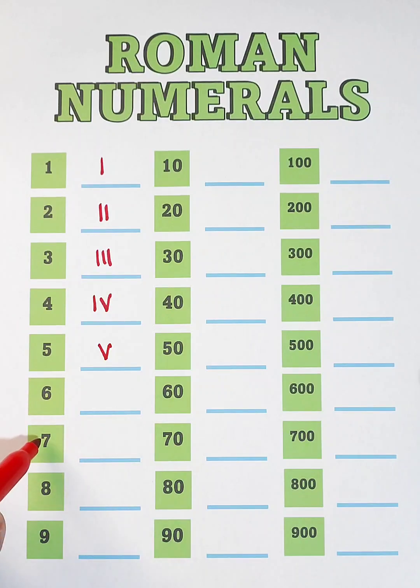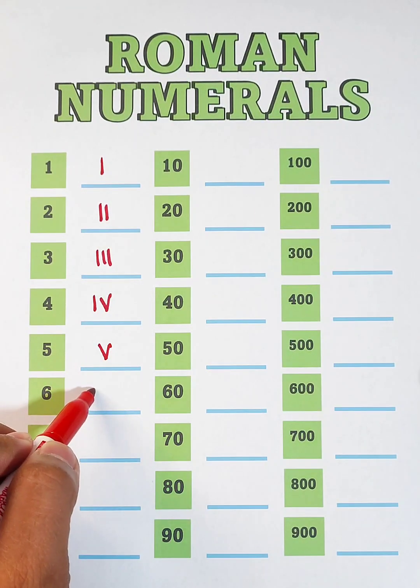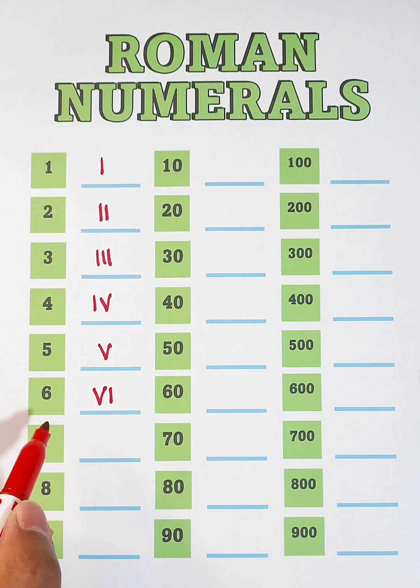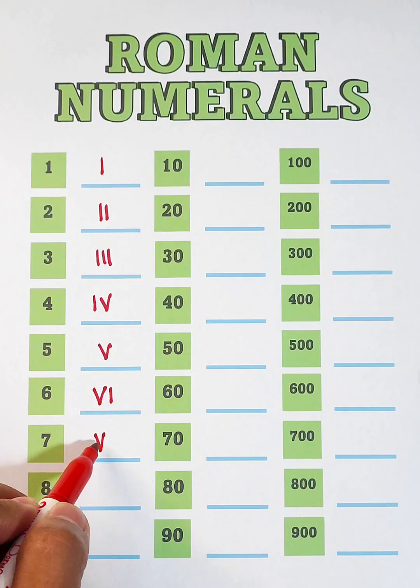Next, we have 6, 7, and 8. For 6, 7, and 8, we will use 5 plus 1, so that is VI. For 7, 5 plus 2, that is V, I, and I.